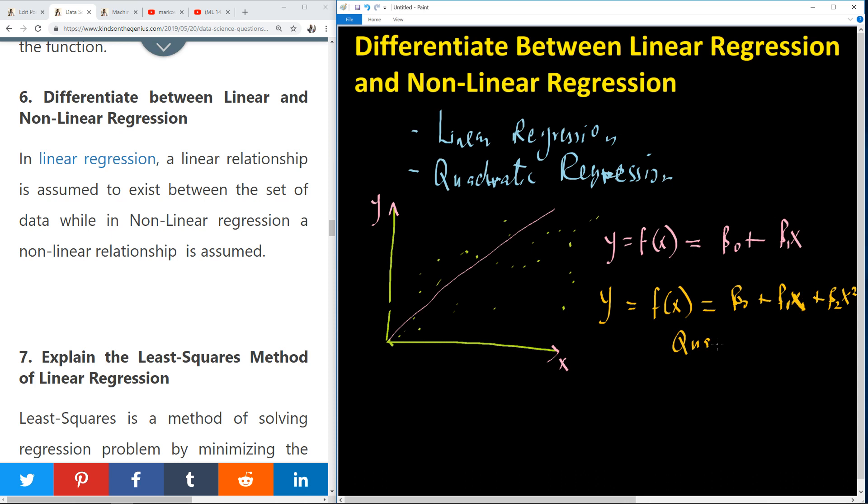So now we have a quadratic relationship between the two variables. So in linear regression, a linear relationship is assumed to exist between the set of data, while in nonlinear regression, a nonlinear relationship is assumed between the data.